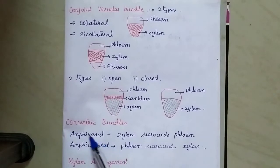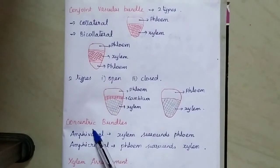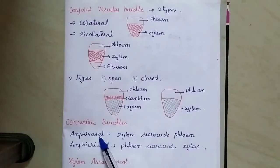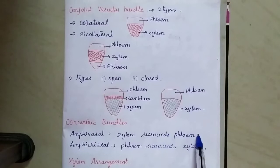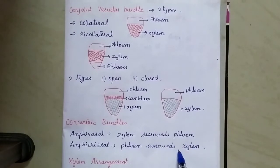Next is the concentric vascular bundle. In the concentric vascular bundle, it is classified into two types: one is amphivassal and another one is amphicribral. In amphivassal, xylem surrounds the phloem. In amphicribral, phloem surrounds the xylem. This type of arrangement is known as amphicribral.